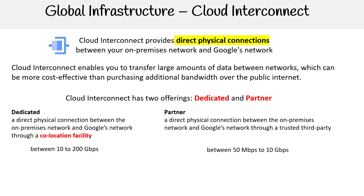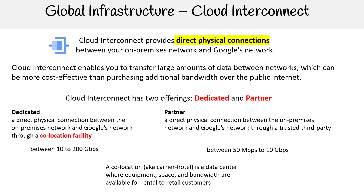A co-location facility, or carrier hotel, is a data center where equipment space and bandwidth are available for rental to retail customers. The idea is that it's a rental data center. Google has ones that they're approved with, so you have a bit more direct control over it. It just depends on what you want to do.